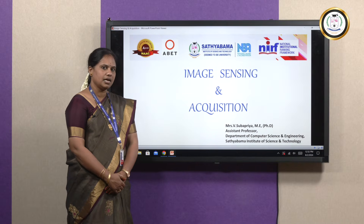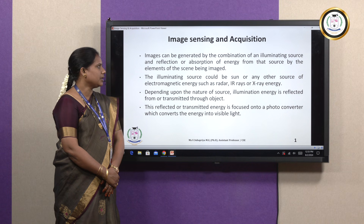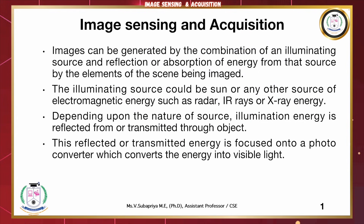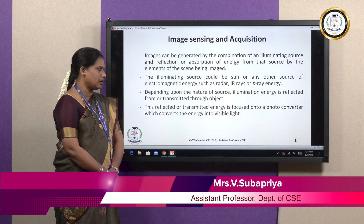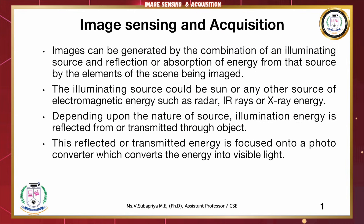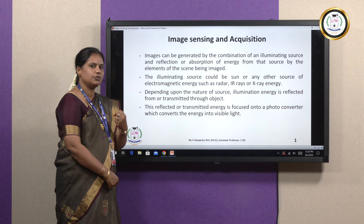Images can be generated in a combination of an illuminating source and reflection or absorption of energy from that source by the elements of the scene to be imaged. The illuminating source could be the sun or any electromagnetic radiation such as radar, infrared rays, or X-ray. Depending upon the nature of the source, the illumination energy is reflected from and transmitted into an object. This reflected or transmitted energy is focused in order to convert that energy into visible light and in order to perceive an image.